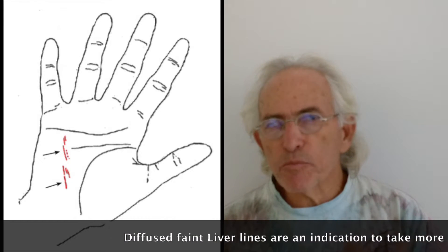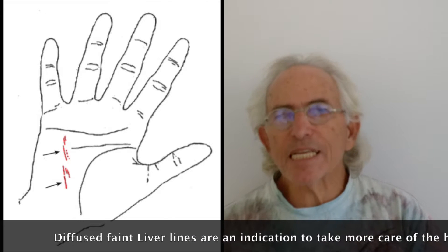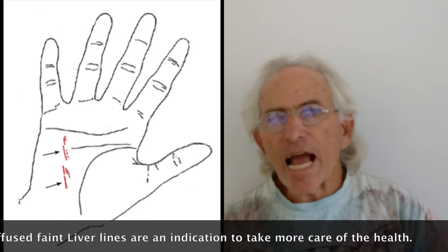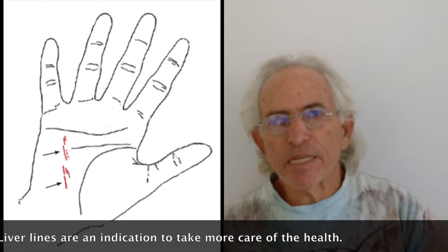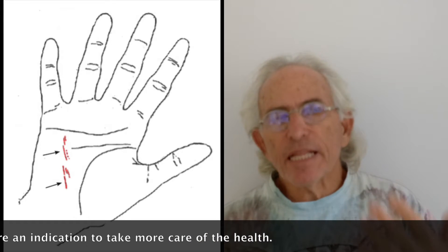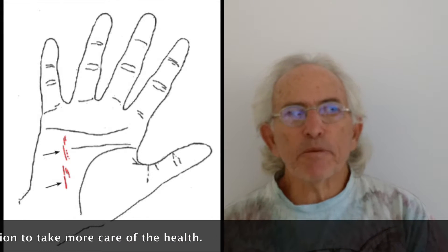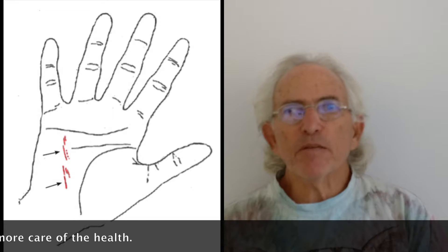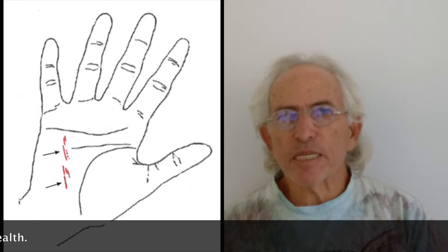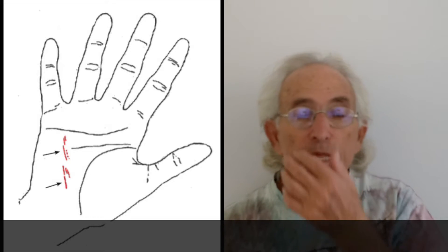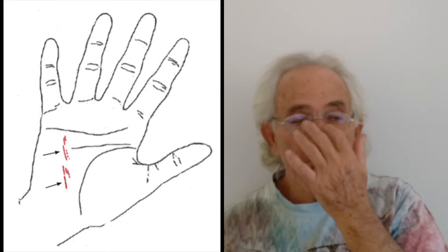Because in the energy body, which this would, let's assume that this is representing the energy body, things happen six months before they actually happen in the physical body. So and it's been very true. So I tell the person, because the person says, well I am being as healthy as I can. And I say, well you have to increase it. You know, whatever you're doing now, it needs more work, because if you don't do something, something's going to come down.